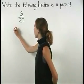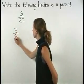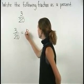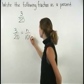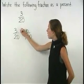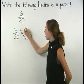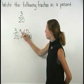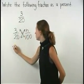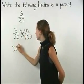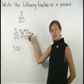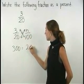So we have three over twenty is equal to n over one hundred. Now we can use cross products to find the missing value. So we have three times one hundred, which is three hundred, is equal to twenty times n, or twenty n.